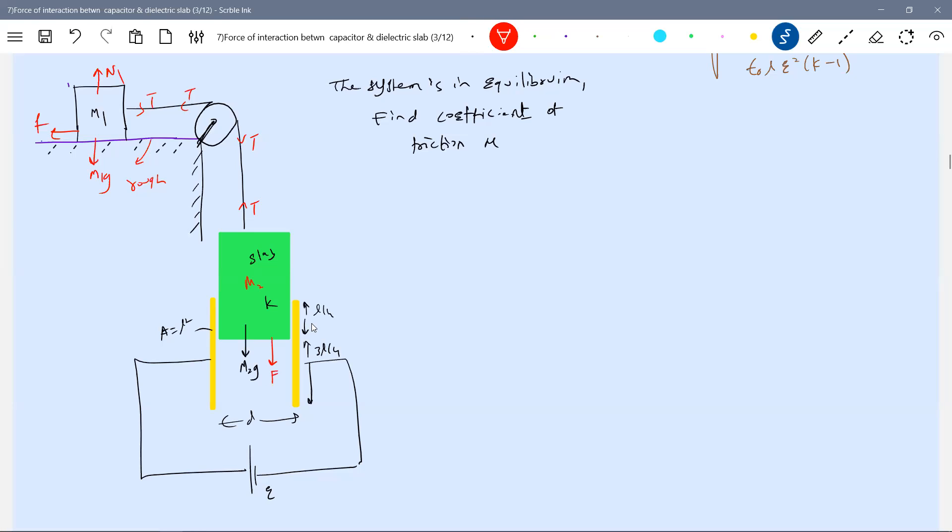Now it's in equilibrium, so we will write f minus t equal to 0, f equal to mu m1g minus t equal to 0. Then for equilibrium of slab...